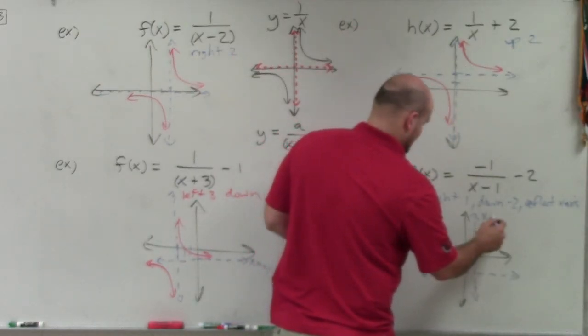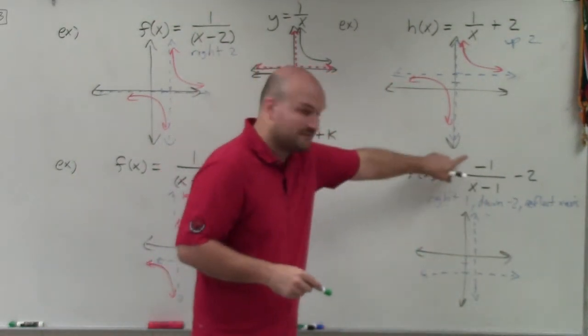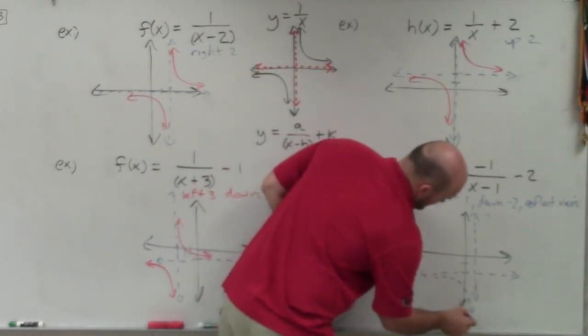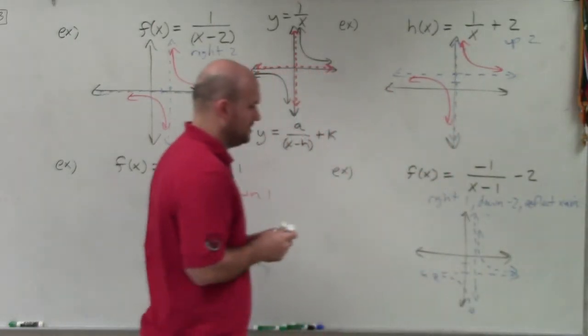So I have x equals 1 negative 1. OK, now, again, my graph, without the reflection, I know it looks something like this, right? And I'll just use dash to kind of remind you that that's not actually going to be the graph.